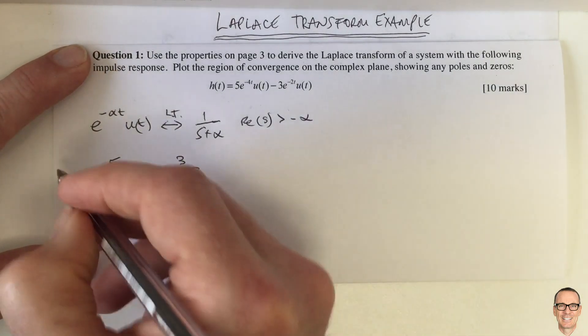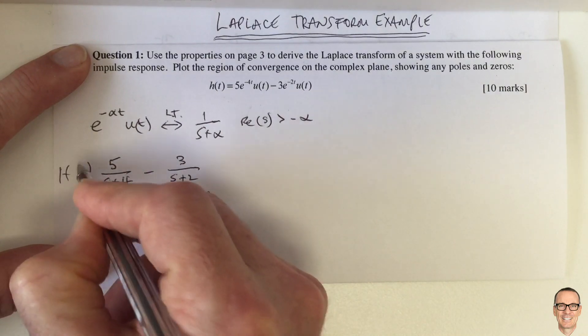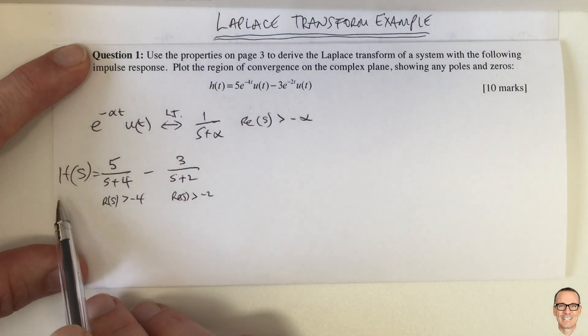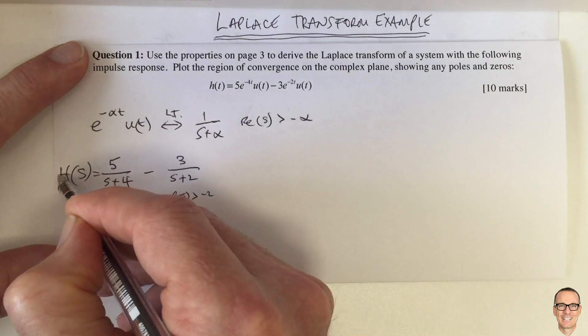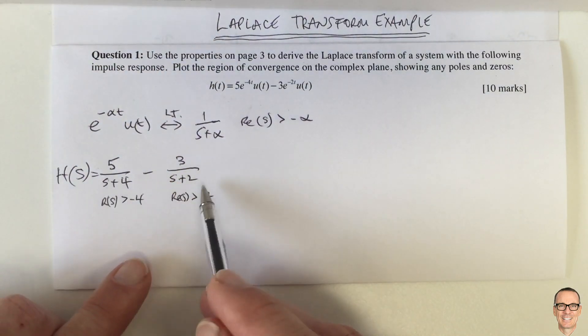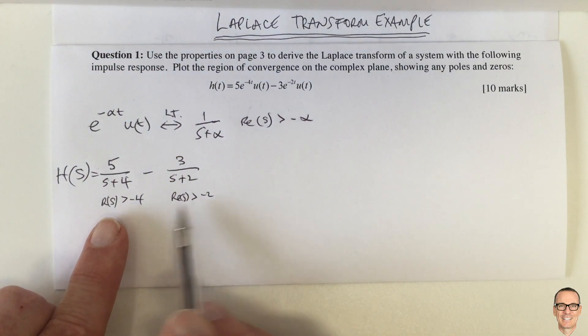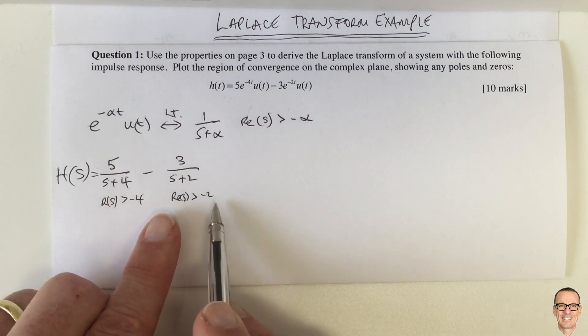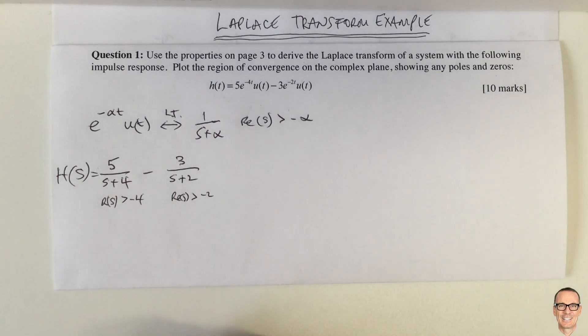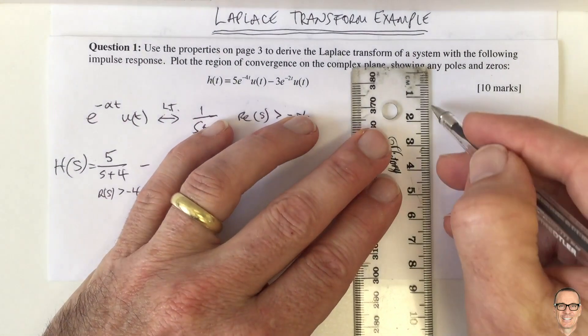So for the overall transform, the region of convergence has to hold for both of the terms. So it's the overlap of these two regions. This is bigger than minus 4, this is bigger than minus 2, so the region where they both hold is bigger than minus 2.